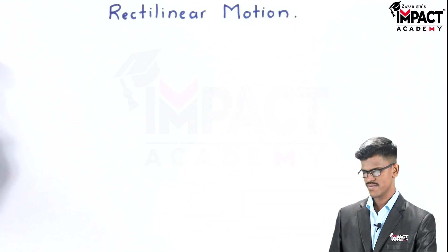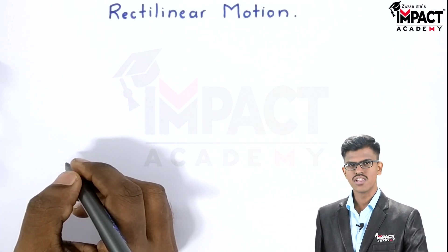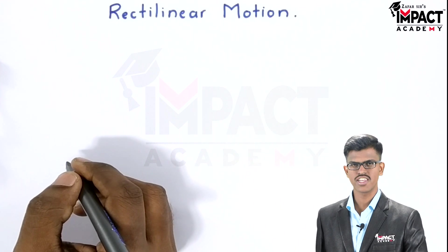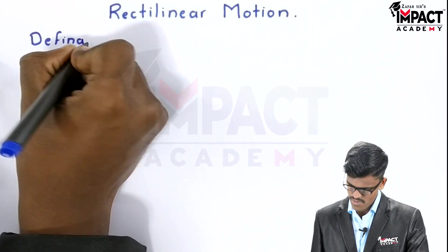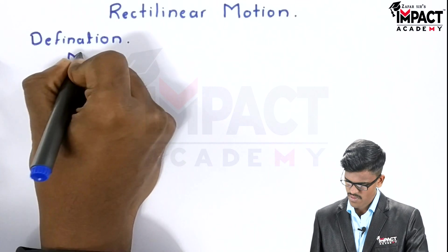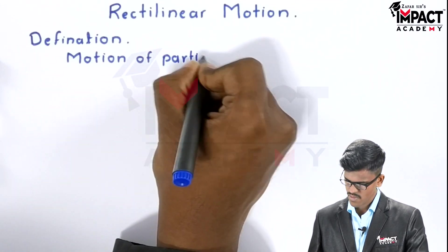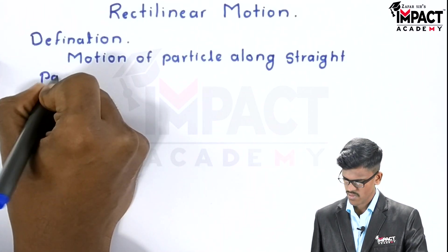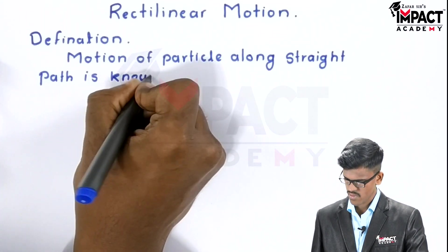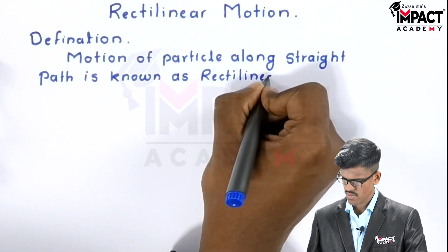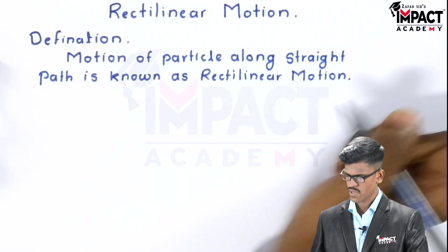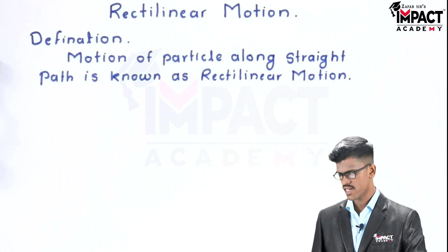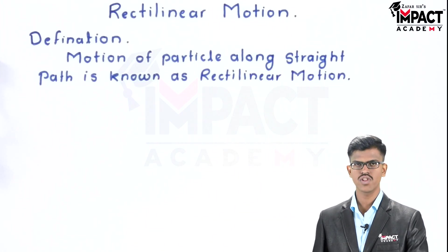Hello friends, today we discuss about rectilinear motion. Let's start with the definition of rectilinear motion. According to definition, the motion of the particle along a straight path is known as rectilinear motion.